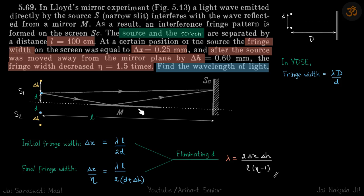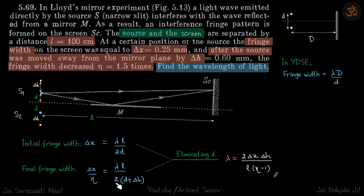Because of the mirror, if the source is here, its image will be at the same distance d from the line of the mirror. So we can directly use our formula: fringe width delta x equals lambda L over 2d, since the distance between the slits is 2d.